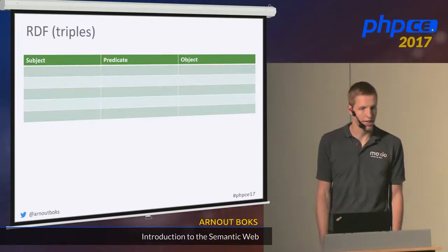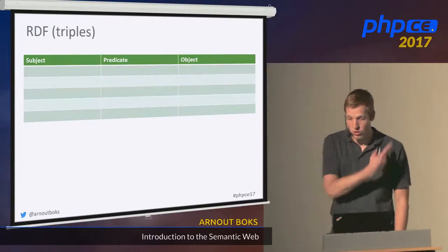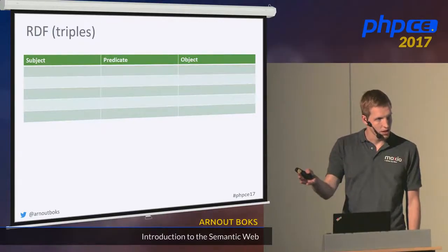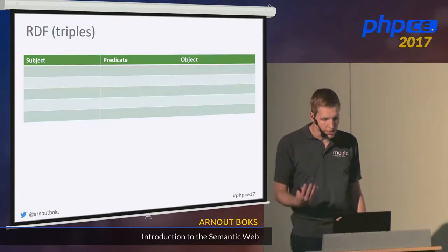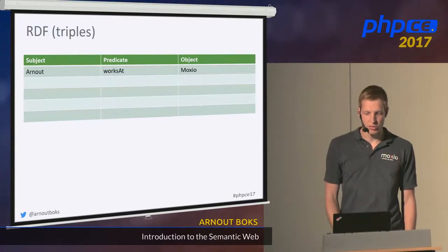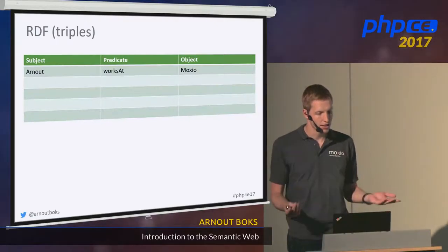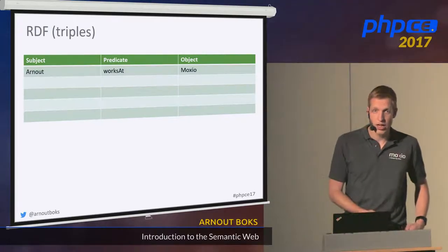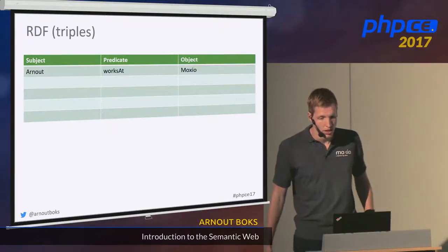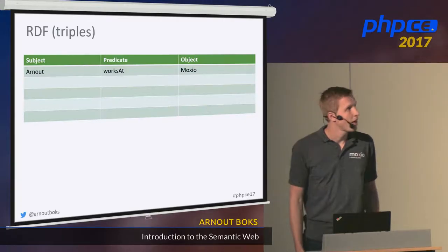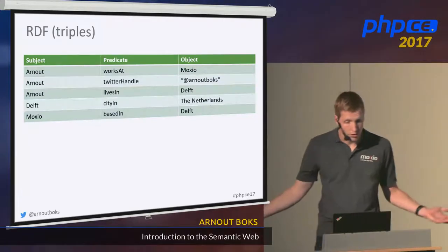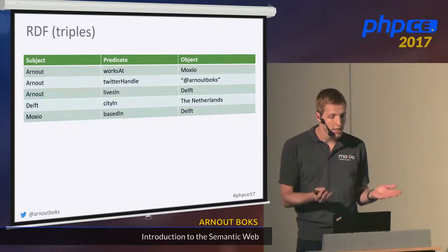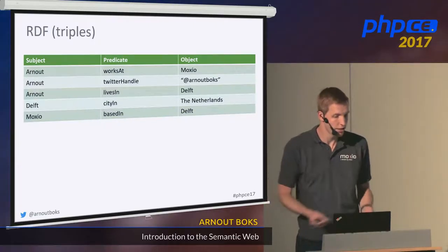So what does RDF look like? RDF is actually just a table with three columns: a subject, a predicate, and an object. Those are meant to be interpreted in the grammatical sense. Every row in the table represents a statement, and because each statement consists of three parts, we also call it a triple. So let's look at some RDF data — I'll make some about myself. My name is Arnoud, and I can say that I work at Moxio, which is the company I work for. In that case I would be the subject, the predicate is 'worksAt,' and the object is Moxio. It's just like a sentence.